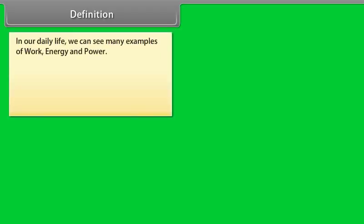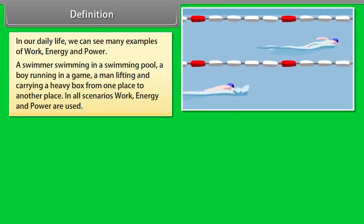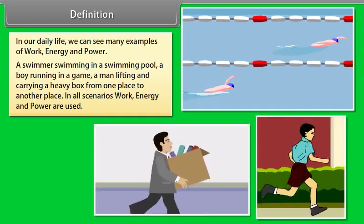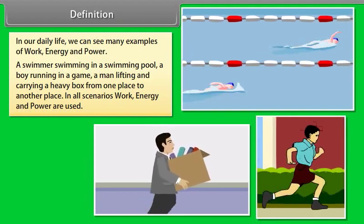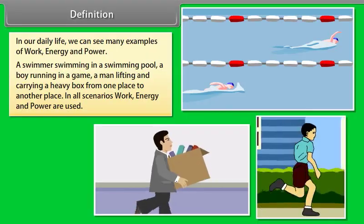Definition. In our daily life, we can see many examples of work, energy and power. A swimmer swimming in a swimming pool, a boy running in a game, a man lifting and carrying a heavy box from one place to another place. In all scenarios, work, energy and power are used.